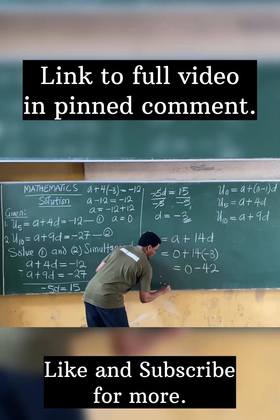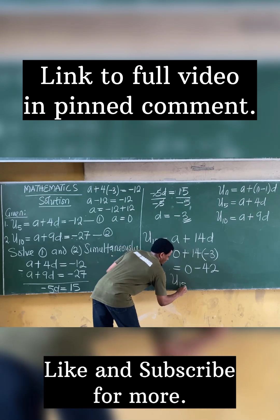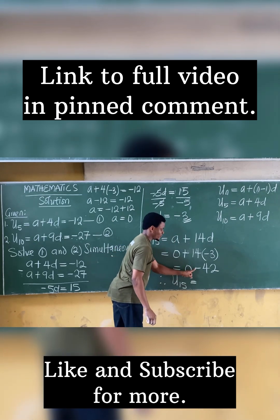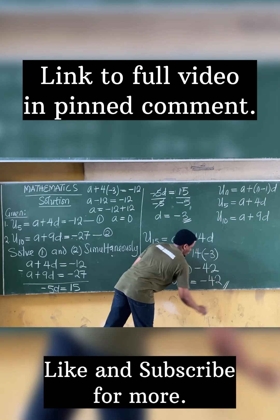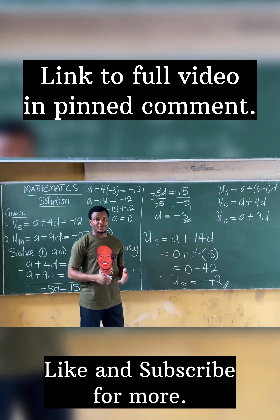So therefore, the 15th term, U15, is equal to 0 minus 42. That's minus 42. So this is the answer to this question.